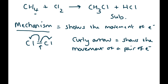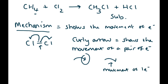A curly arrow is drawn like that, but notice I've drawn a single-headed arrow, not a double-headed one. A single-headed arrow shows the movement of one electron. In radical substitution, just one electron moves.